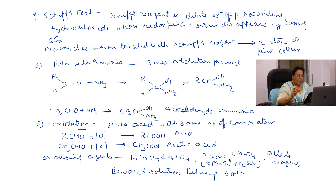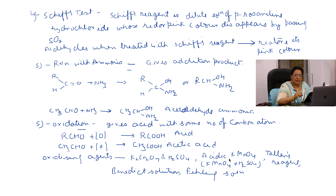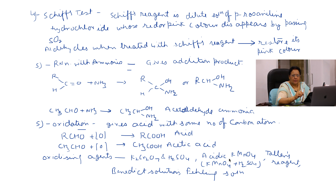The next property is Schiff's test. Schiff's reagent is a dilute solution of pararosaniline hydrochloride whose red or pink color disappears by passing SO2 gas into the solution. Aldehydes restore the pink color with Schiff's reagent.